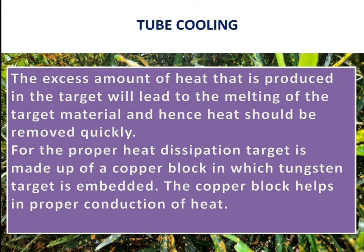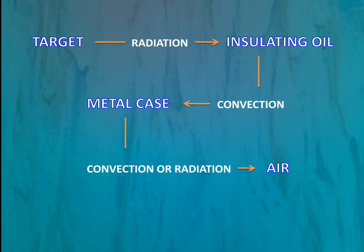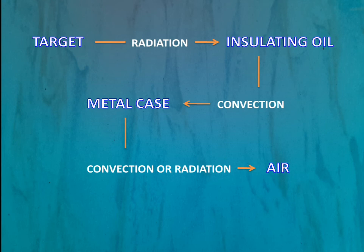Now let's look at how heat is dissipated from the target area. There are four main methods of heat transfer: the first is conduction, which occurs in solids by mutual contact. The second is convection, which occurs in fluids and gases. The third is radiation, where heat transfer occurs by means of electromagnetic waves. The fourth is evaporation, where heat is transferred by means of vapors.